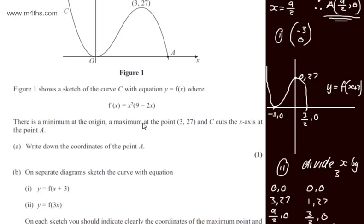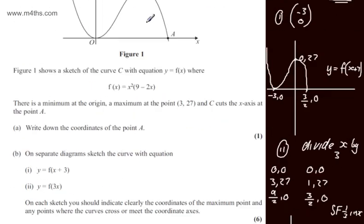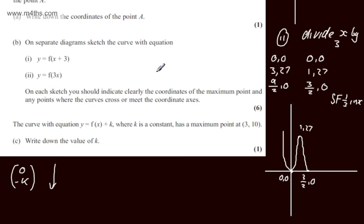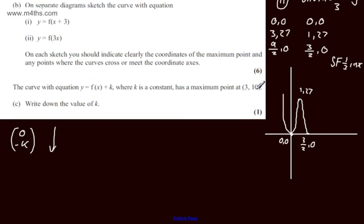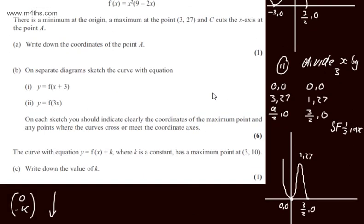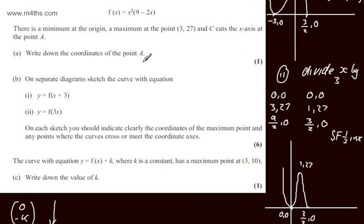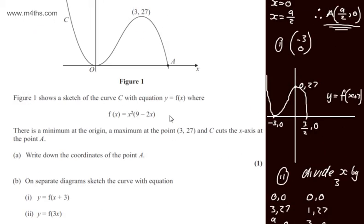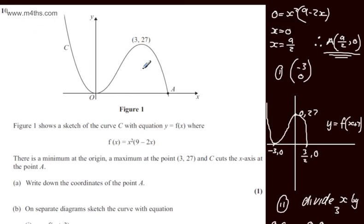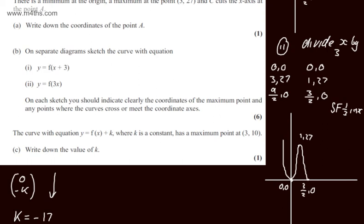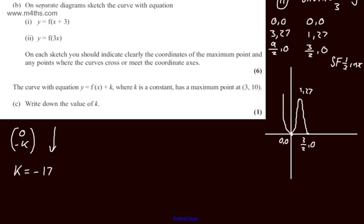If we think about this now, we've got this maximum point at 3 comma 27. So I would have needed to subtract 17 to get to 10. Therefore, we can state that k will be equal to minus 17. We simply pick this graph up and we've moved it down by the 10 to the point 3 comma 10, which means we've moved it downwards by 17 units. So k will be minus 17.